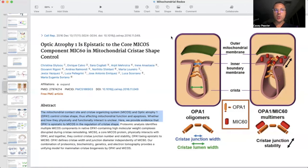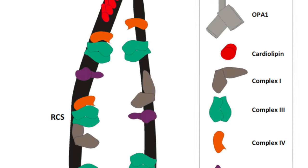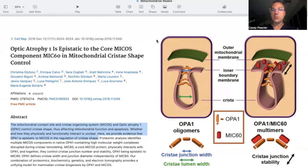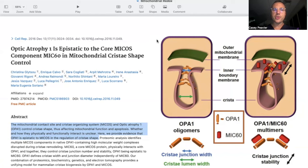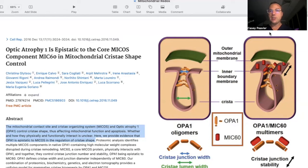Another important factor is the optic atrophy one protein, OPA1, which is part of the MICOS complex. We've talked about MICOS and its importance for cristae formation, and how it's made up of dozens of different proteins. One of the most important is OPA1. When OPA1 is functional and adequate, it allows the MICOS to be controlled and shaped in a way that maximizes super complex formation. OPA1 is epistatic to MICOS in the regulation of cristae shape, thus affecting mitochondrial function and apoptosis.